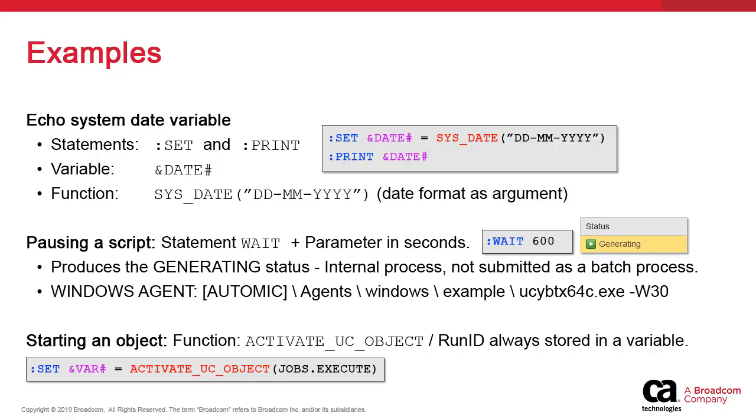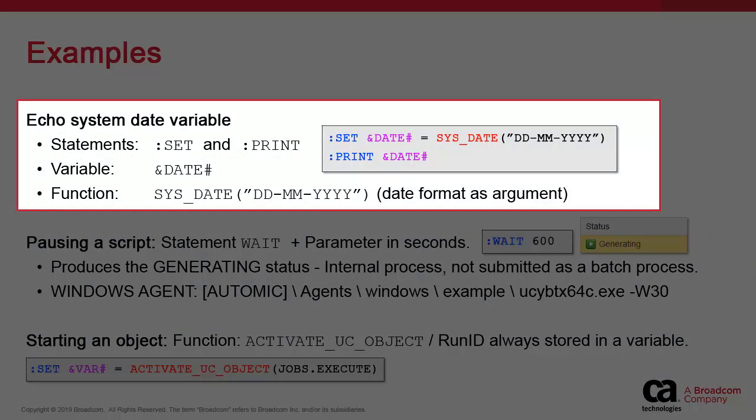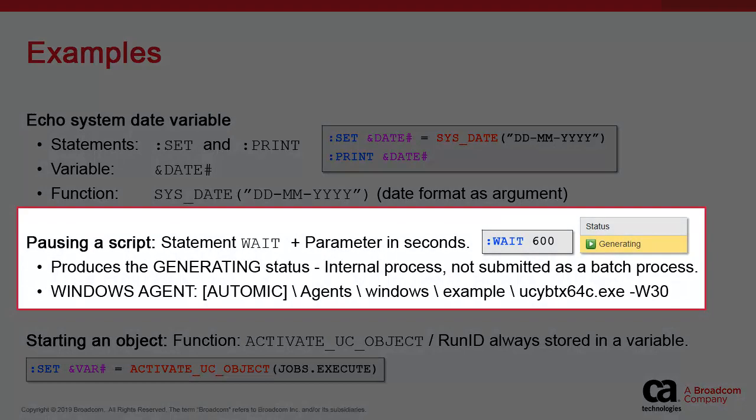Let's provide a few examples for script implementations. We can set a variable using the sysDate function and then output the contents. The sysDate function can use any number of arguments for the date formats. The print command outputs the value to the activation reports. There are various ways of inserting pauses into your scripts. The first is the wait command, which takes a parameter in seconds. Remember that any scripts will be interpreted before any OS or application batch code is submitted. Therefore, if you insert a wait, the process is technically not submitted — it waits for the given number of seconds, stalling processing on the server, and your task will take the generating status. Note that for Windows agents, you can also rely on a standard sleep command called ucbtx, available in the installation package in the agent Windows example directory. You can copy the example directory into your agent directory and use the command with the dash w parameter in seconds. This is the exact equivalent of the Unix sleep command.